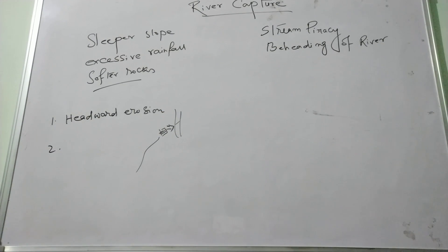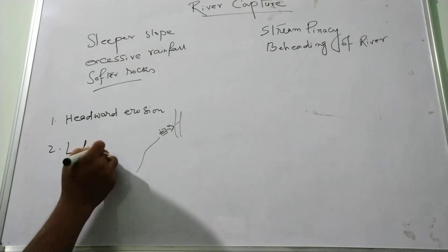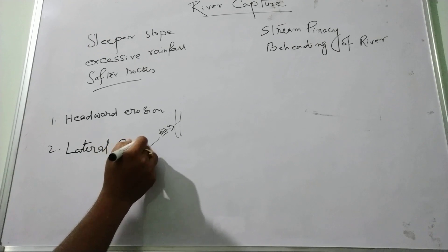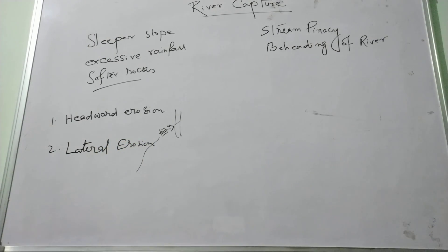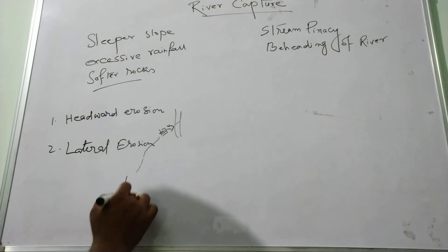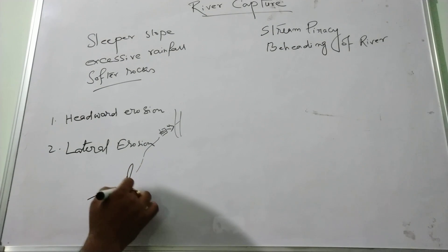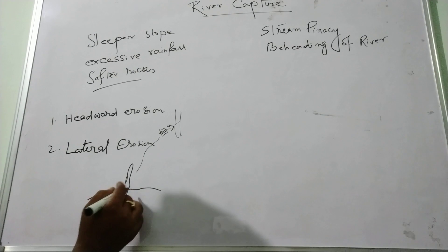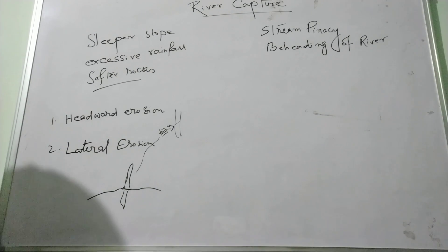Second, it is caused due to lateral erosion. Due to lateral erosion in the mature stage, the size of the interfluve is reduced and the rivers join each other, causing river capture.